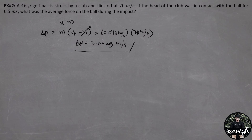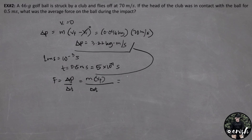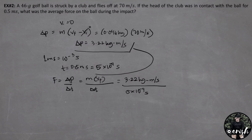Since the given time is in milliseconds, we convert: 1 millisecond equals 10 raised to negative 3 seconds. So the time of 0.5 milliseconds equals 5 times 10 raised to negative 4 seconds, to fit our units. By the formula — change in momentum over delta T, which by Newton's second law equals mass times the final velocity over delta T — substituting values gives 3.22 kg·meters per second divided by 5 times 10 raised to negative 4 seconds. By calculating, the force is equal to 6.4 times 10 raised to 3 newtons, or simply 6.4 kilonewtons.